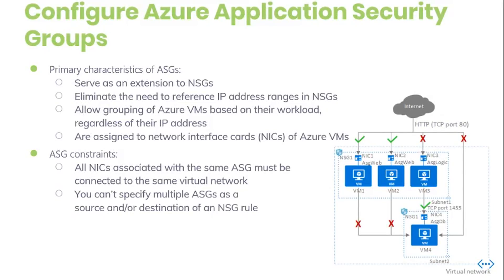AFD will enable you to configure network security as a natural extension of an application, such that you can group VMs and define network security policies based on workloads. You can also reuse your security policy as a scale without manual maintenance of explicit IP addresses. The platform manages the complexity of explicit IP addresses and multiple rule sets, allowing you to focus on your business logic. In the illustration, NIC1 and NIC2 are members of the ASG Web ASG.